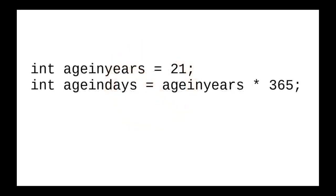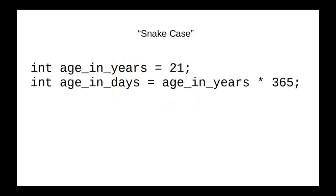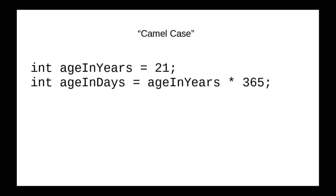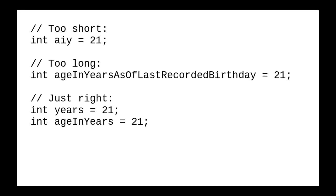If we spell out the name entirely, we get names that are long and difficult to read. One solution is to use underscores between the words — this is called snake case. Another method, which is the one used by convention in Java, is camel case, where each word after the first is capitalized. It's called camel case because the capital letters are reminiscent of the humps of a camel. In this course, we'll expect you to use camel case for all your multi-word variable names. To summarize: always use meaningful variable names. Don't make them too short. Don't make them ridiculously long. Make them meaningful and just the right size.